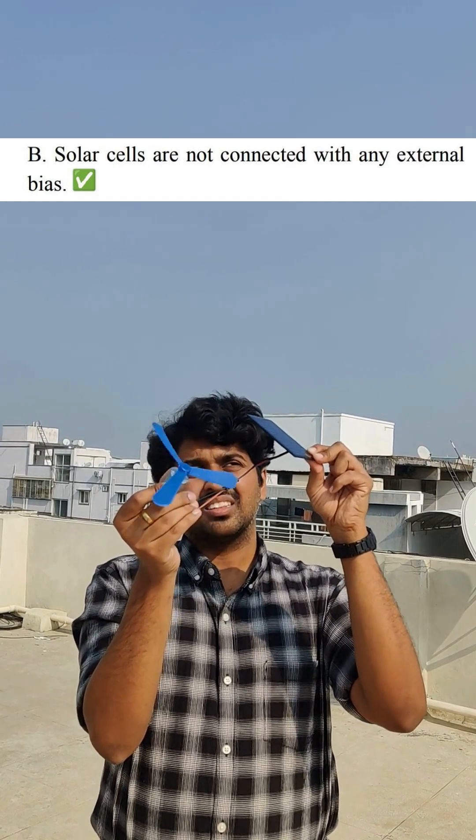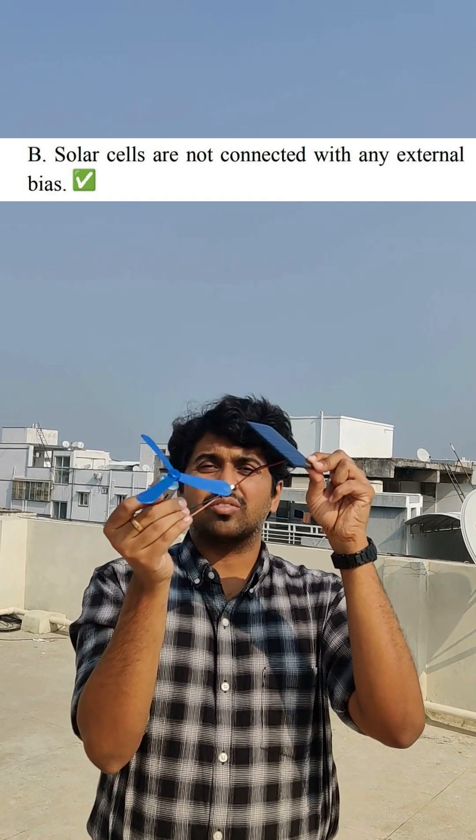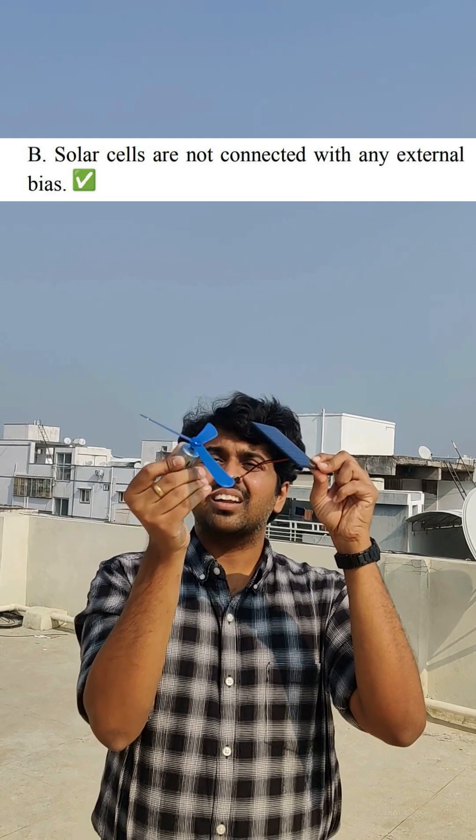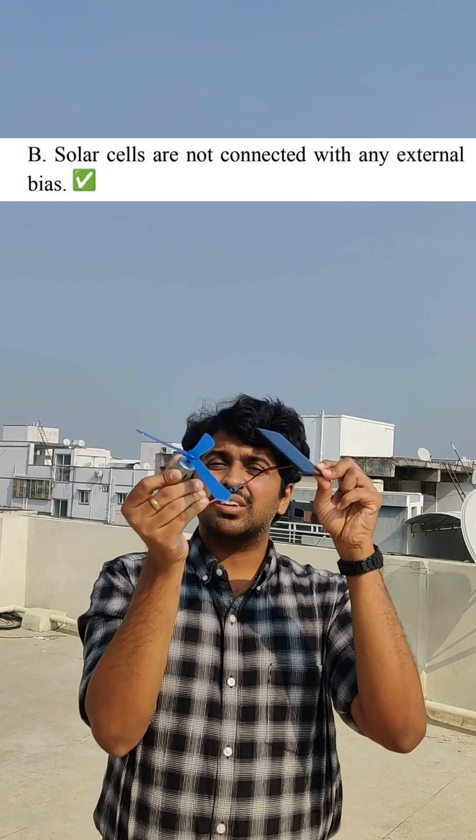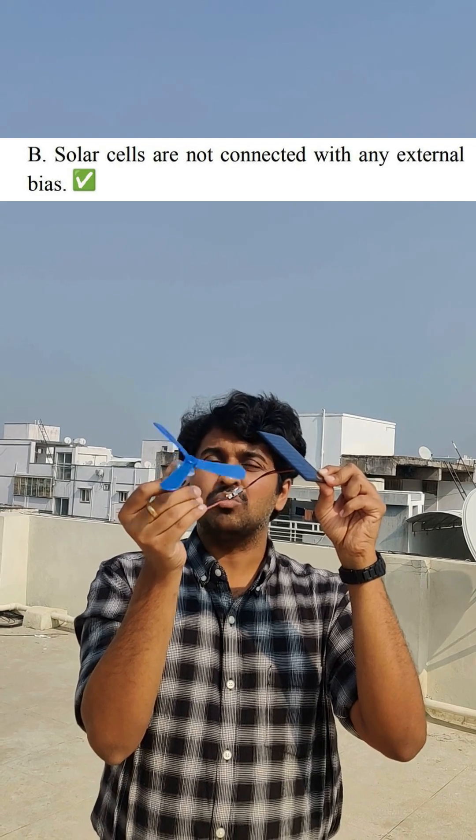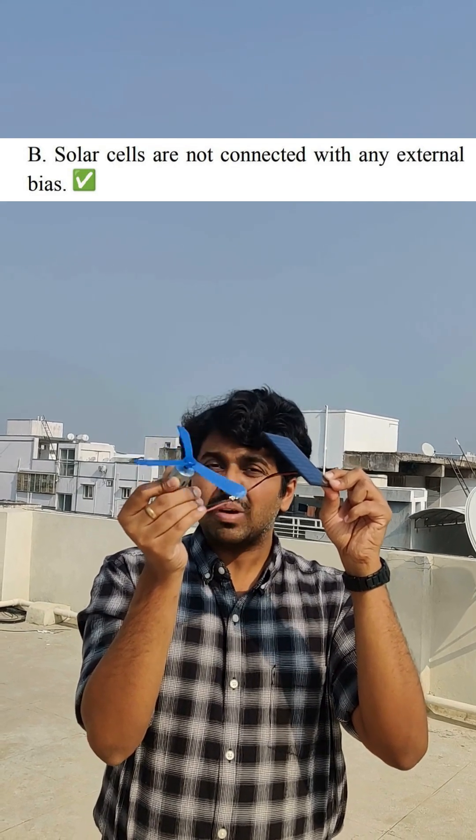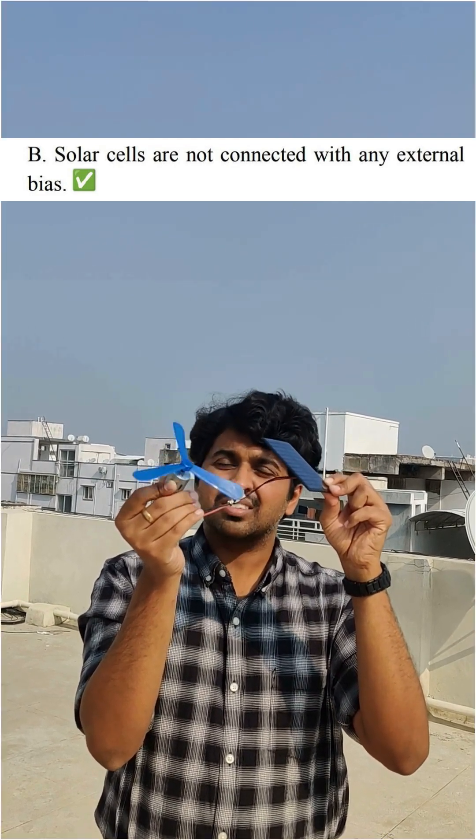So you see the solar cell acts as a source of EMF. The light energy is being converted to electrical energy which is then converted to kinetic energy of the motor. So yes, there is no biasing for the solar cell.